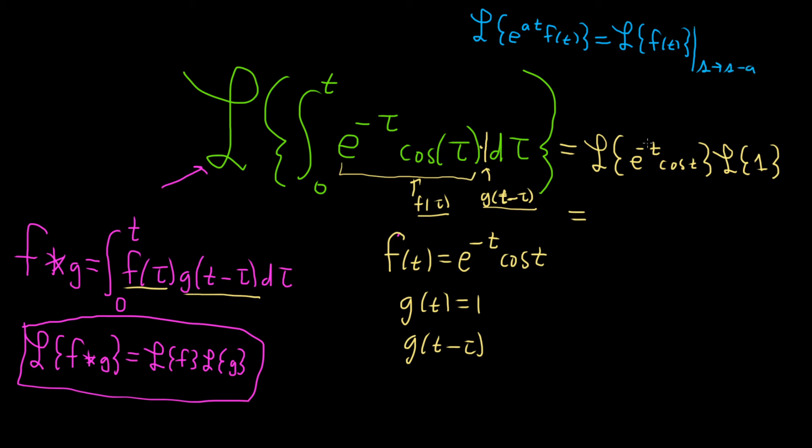So here a is negative one so we'll drop the exponential function. We simply have the Laplace of cosine t and then we'll take our shift and it'll be s to s minus a, but a is negative one so it'll just be s plus one, times the Laplace of one which is simply one over s.